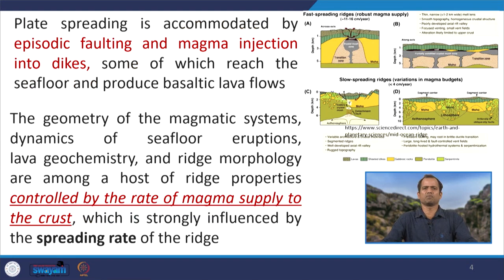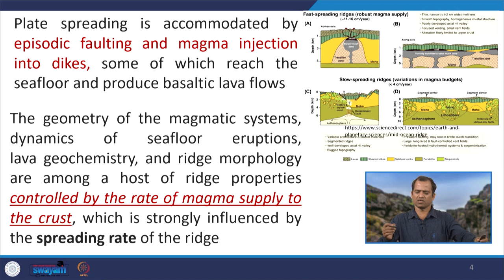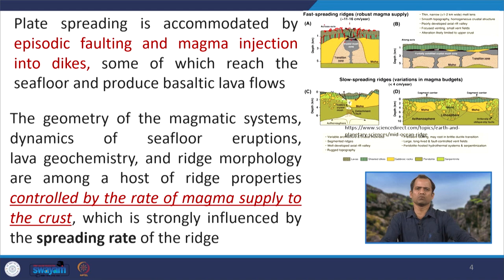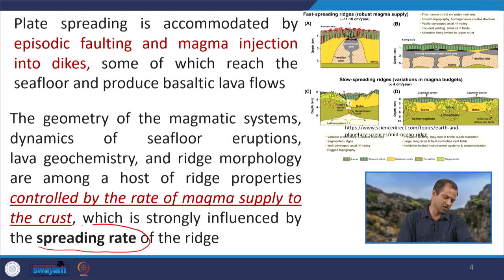Plate spreading is accommodated by episodic faulting and magma injection into dikes, and some of those dikes behave as conduits to supply magma from the subsurface to the surface, finally forming pillow basalt. We have a melt lens and a magma chamber, with dikes aligned parallel to the ridge axis. A few dikes move to the surface and pour magma there, creating pillow basalt. The geometry of the magmatic system, dynamics of seafloor eruption, lava geochemistry, and ridge morphology are all controlled by the rate of magma supply, which in turn is controlled by spreading rate.